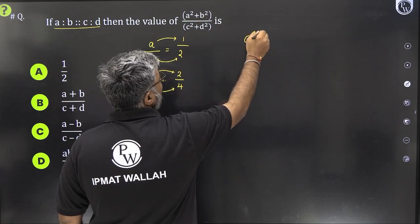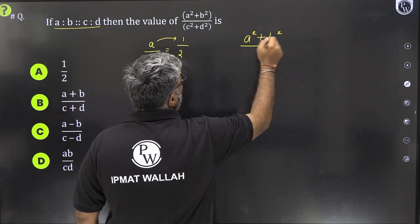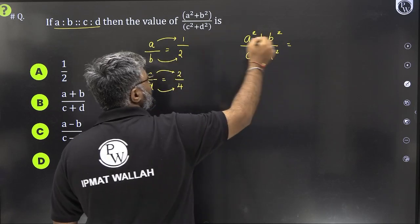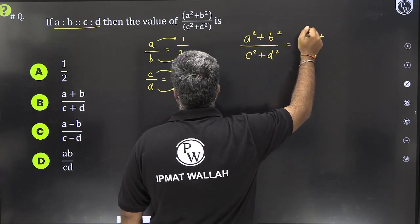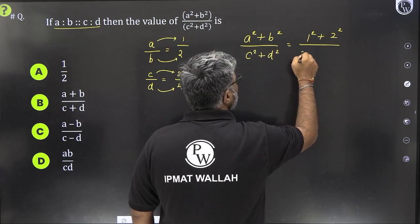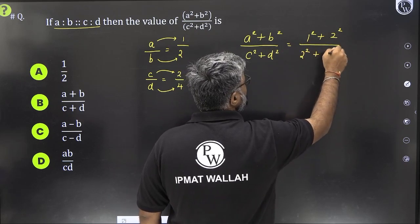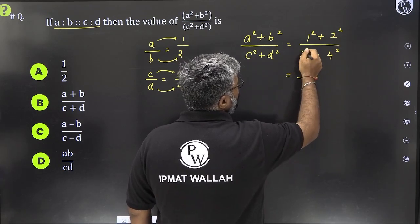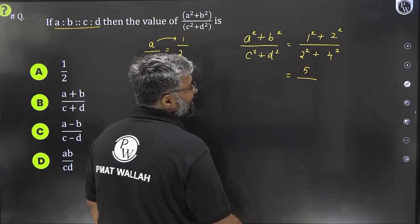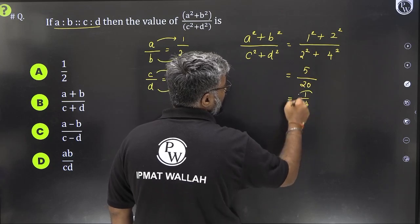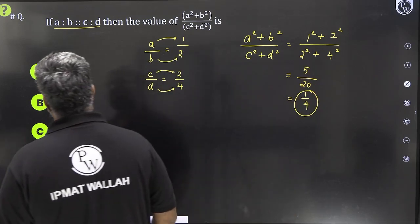With that, let's find out the unknown that is A square plus B square upon C square plus D square. A square is 1 square. B square is 2 square upon C square is 2 square. D square is 4 square. With this, we have 1 plus 4 is 5. 4 plus 16 is 20. 5 by 20 is 1 by 4. This is what we are looking for in the options.